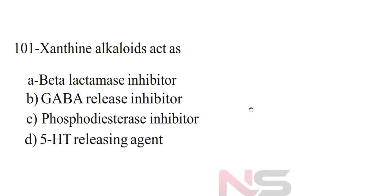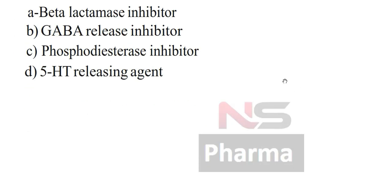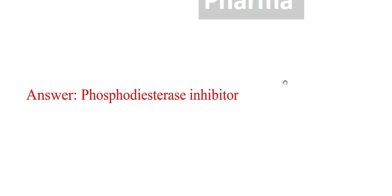Question number 101. Xanthine alkaloids act as: Option A. Beta-lactamase inhibitor. Option B. GABA-release inhibitor. Option C. Phosphodiesterase inhibitor. Option D. 5-HT releasing agent. Answer: Phosphodiesterase inhibitor.